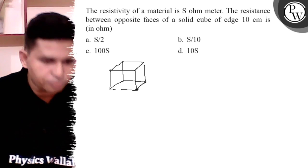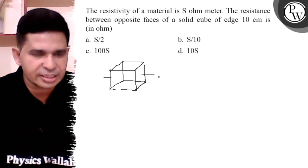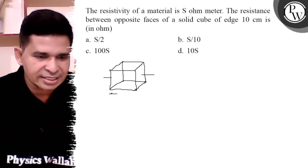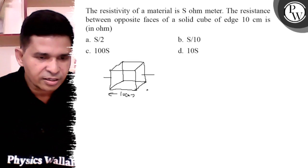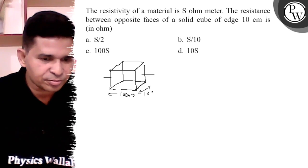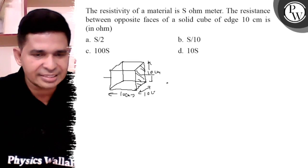So, it is a cube. Now we have to determine the resistance between these two faces. It is 10 centimeter, 10 centimeter, it is also 10 centimeter, it is also 10 centimeter. This is the cross section area and this is the length.